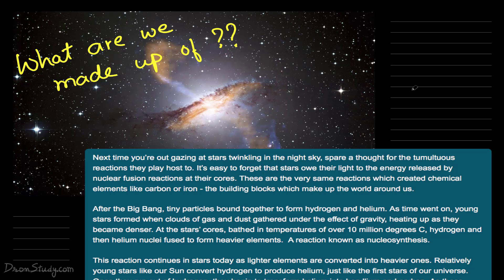So obviously the answer is that we are made from atoms — basically electrons, protons, neutrons. Okay, and definitely it's the right answer that we are made from atoms. But the fact is that these atoms — different elements which are present in our universe — where do they ultimately come from?